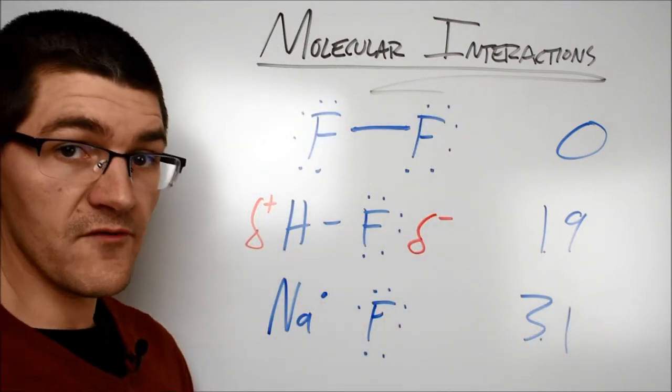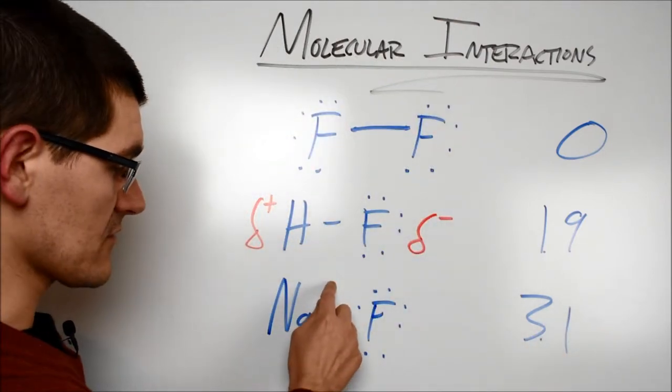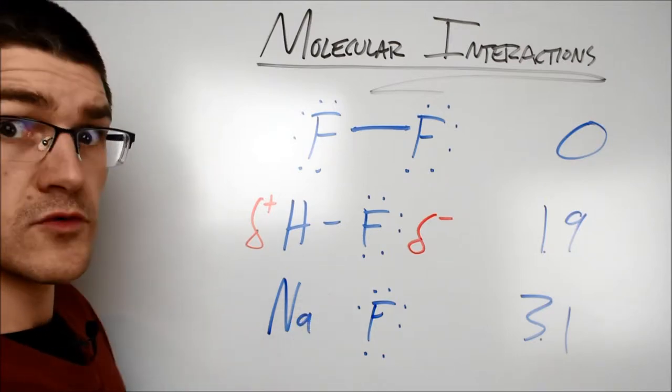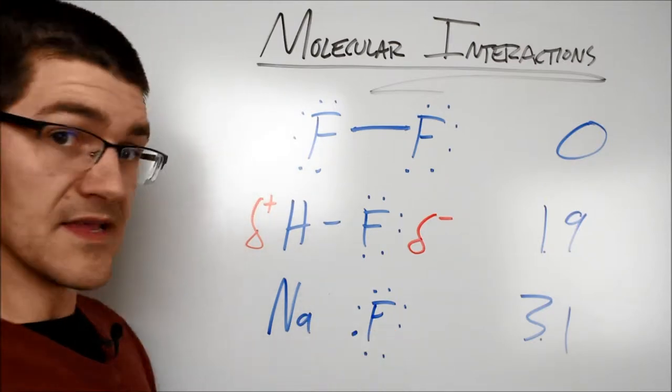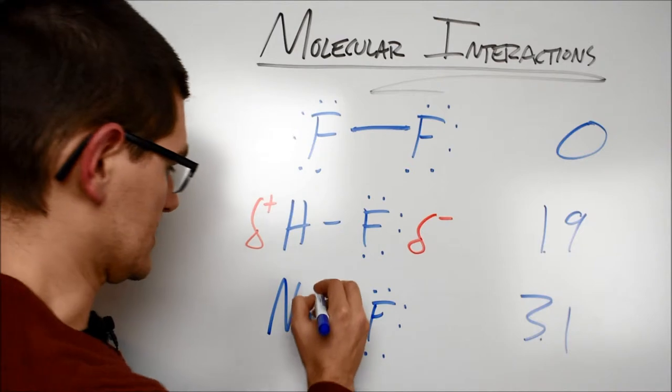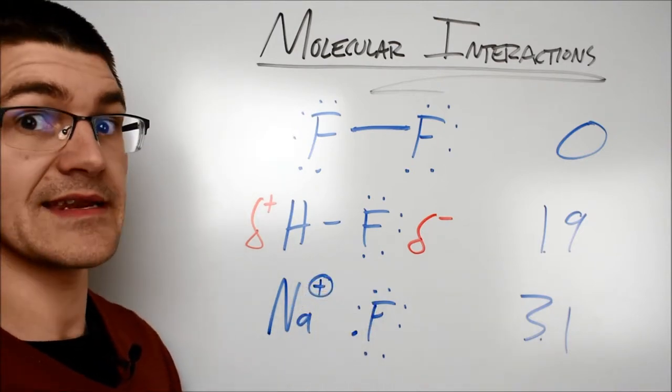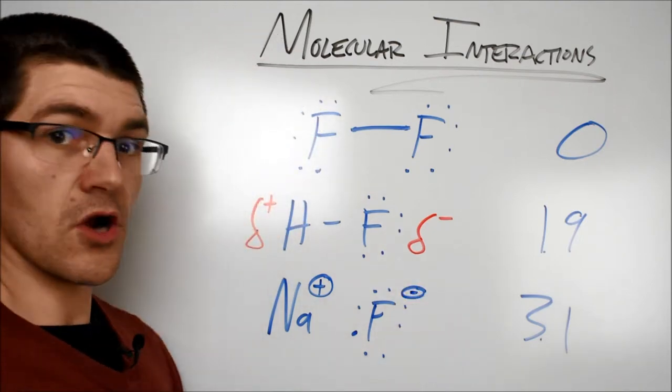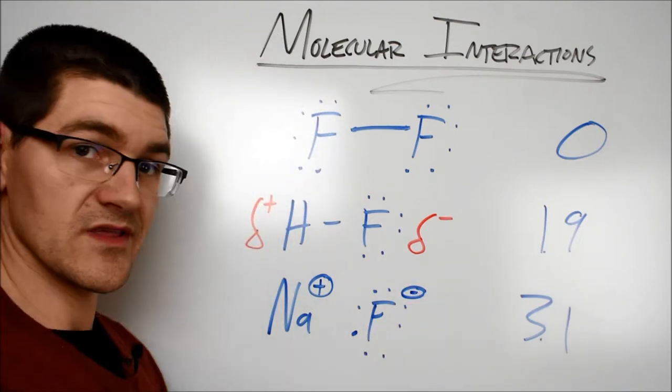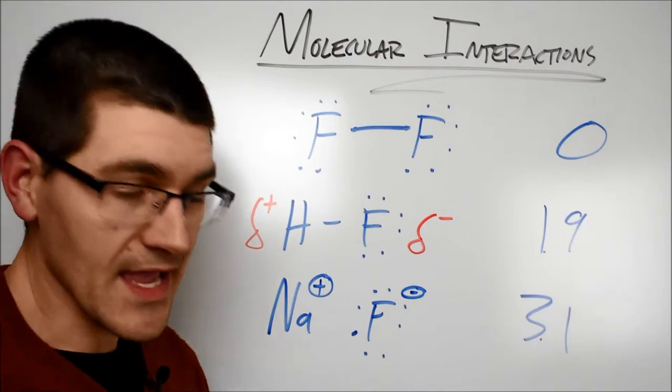This isn't even a covalent bond anymore. This electron from sodium goes away entirely and moves all the way to the fluorine. This means that I have full charges now. My sodium has a positive 1 charge because the electron is gone. It doesn't have any piece of it. And the fluorine has a charge of negative 1, where the electron stays with it the whole time.